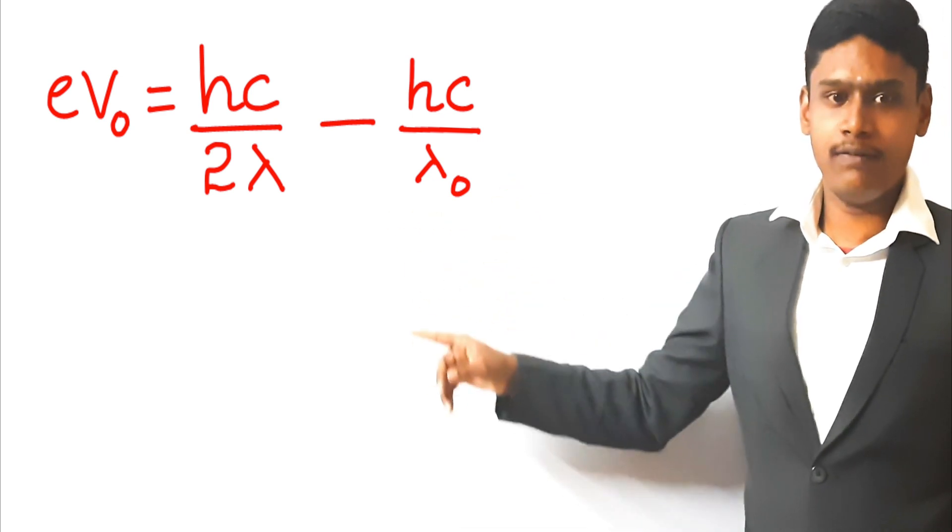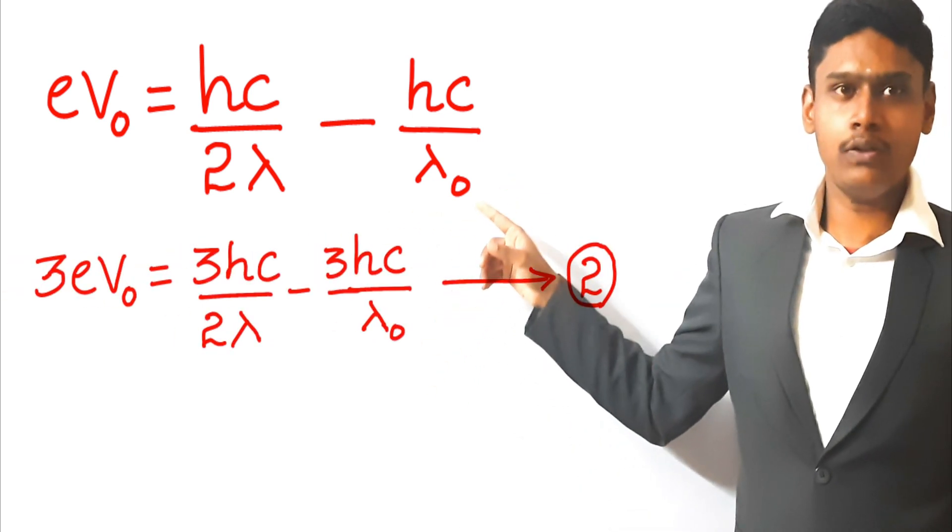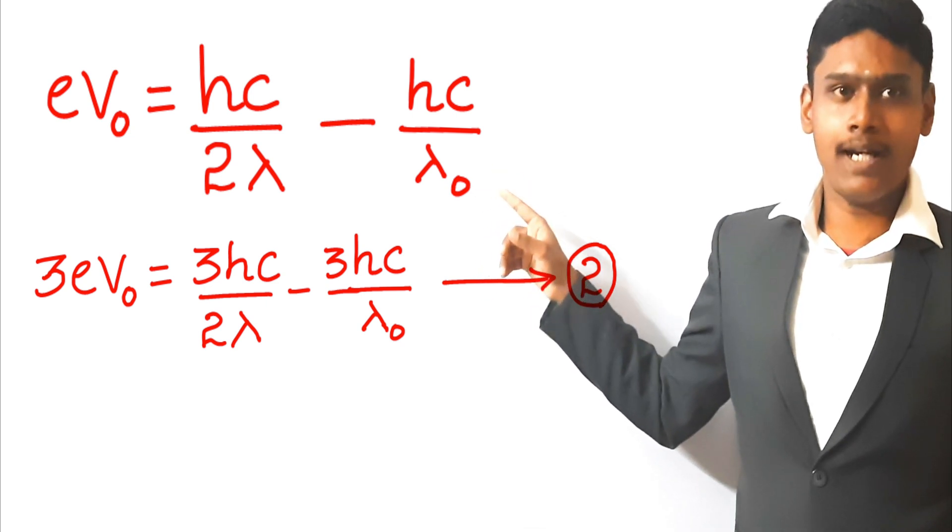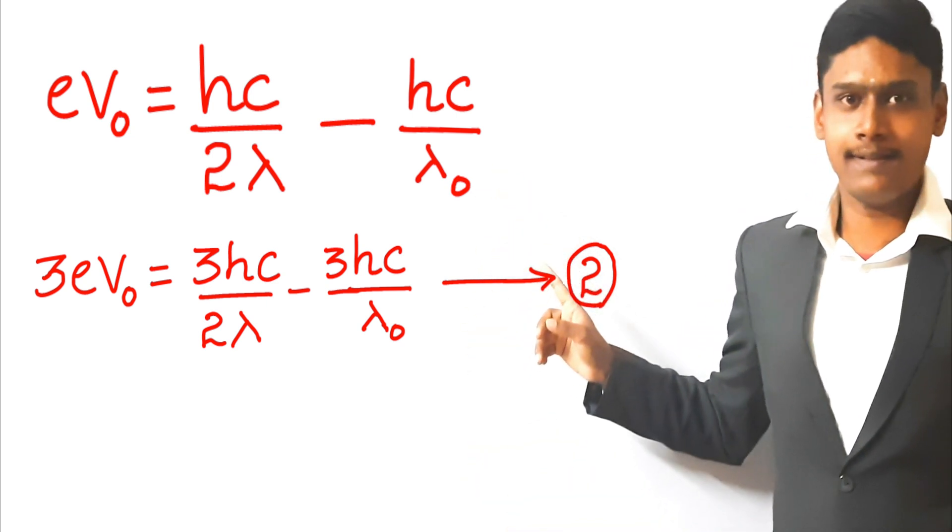On substituting the second case in the formula, we will get eV0 is equal to hc by 2 lambda minus hc by lambda 0. On multiplying 3, we will get 3eV0 which is equal to 3hc by 2 lambda minus 3hc by lambda 0. Let us consider this as the second equation.